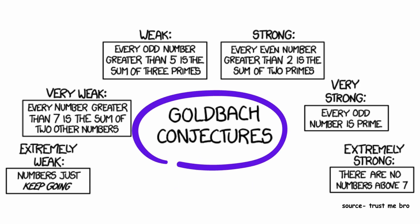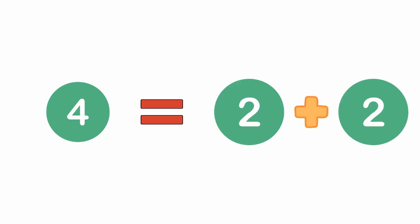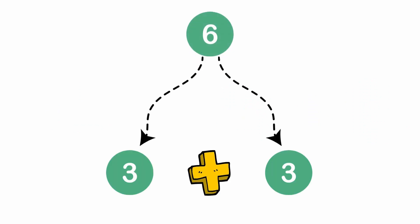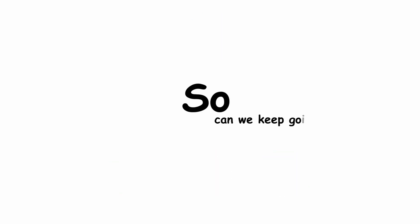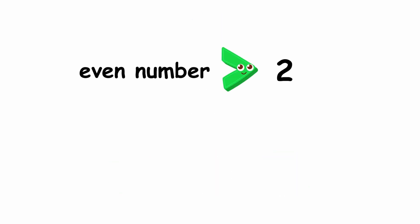Goldbach's Conjecture. Consider the even number 4. It can be expressed as the sum of two prime numbers. 4 equals 2 plus 2. Similarly, 6 is also the sum of two prime numbers, being 3 plus 3. The same goes for 8, which is 3 plus 5. So can we keep going? Is every even number greater than 2 the sum of two primes?